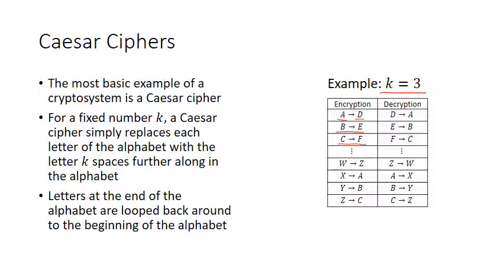When you get to the end of the alphabet, W will be replaced with Z, then you loop back around to the beginning. So you replace X with A, replace Y with B, and replace Z with C.